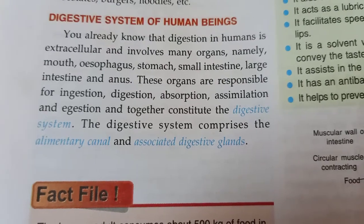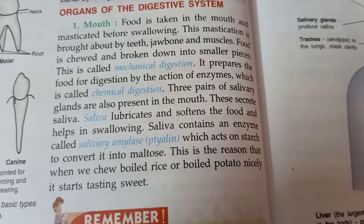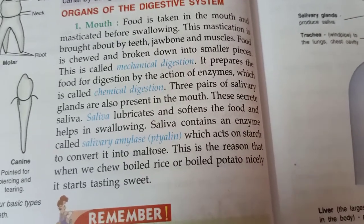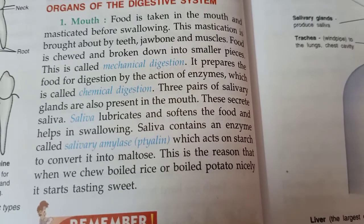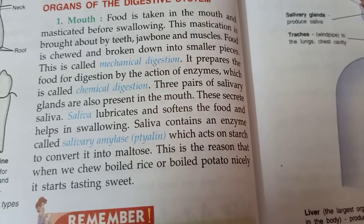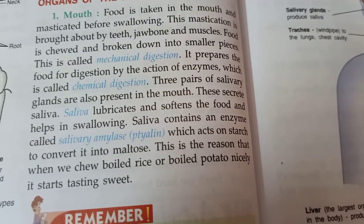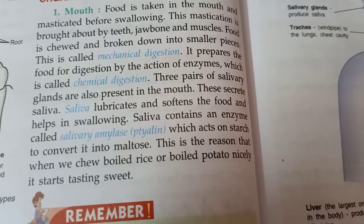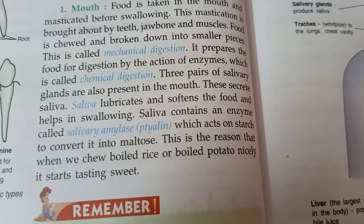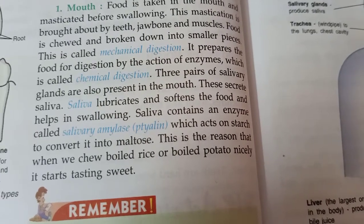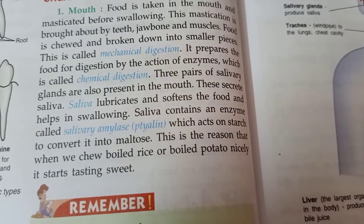The digestive system comprises the alimentary canal and associated digestive glands. The first organ is the mouth, where food is taken in and masticated — meaning chewed — before swallowing. Mastication is brought about by teeth, jaw bone, and muscles, which are responsible for cutting and chewing the food. Food is chewed and broken down into smaller pieces.